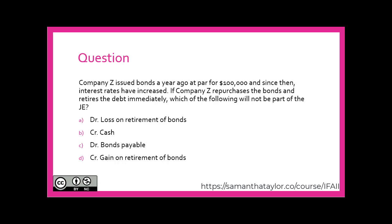Time for a question. Company Zed issues bonds a year ago at par for $100,000. And since then, interest rates have increased. If company Zed repurchases the bonds and retires the debt immediately, which of the following will not be part of the journal entry? A: debit loss on retirement of bonds. B: credit cash. C: debit bonds payable. D: credit gain on the retirement of bonds. Before you lock in your answer, I would suggest first asking yourself — if interest rates have increased, does that mean that my bond is more or less attractive? Once you have that answer, write out the journal entry to take your bond off the books and then pick your answer from your journal entry.